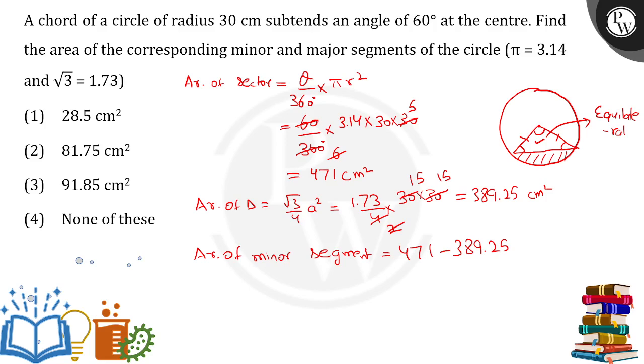Most importantly, you have to do all the calculations on your own. No one can help you with the calculation part, and the more you do, the better. This comes out to be 81.75 cm². That's option number 2.